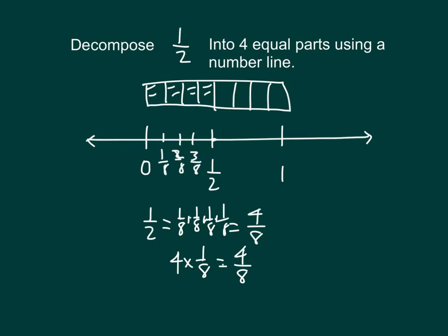If I were to write that using multiplication, where I multiply the numerator and denominator by the same thing — I'm putting it into 4 equal parts, so that's why I'm multiplying by 4, not only in the numerator but also in the denominator. 1 half does equal 4 eighths.